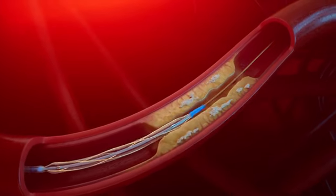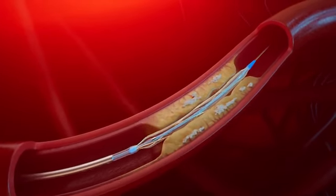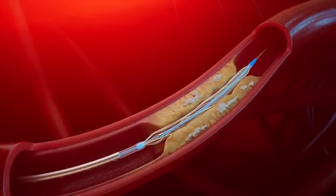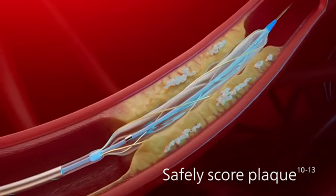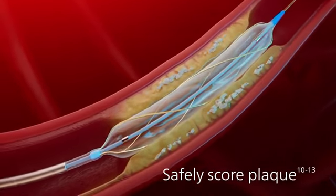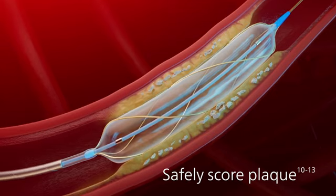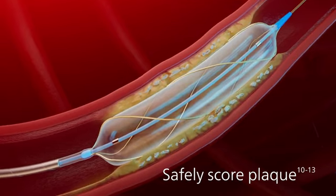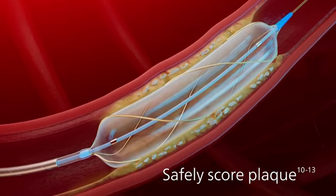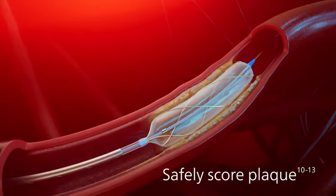Once a channel is created, you can continue prepping your vessel for optimal treatment. Enhance luminal gain by safely scoring residual plaque with the Philips Scoring Balloon Catheter, Angiosculpt Evo.